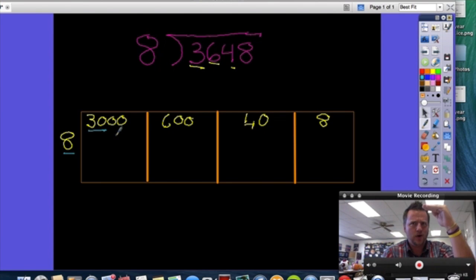So what can we multiply 8 by to get close to 30, but not above? So a number here that would work would be 3. So I'm going to write my 3 up here at the top, and 3 times 8 is 24, and there's my 24.